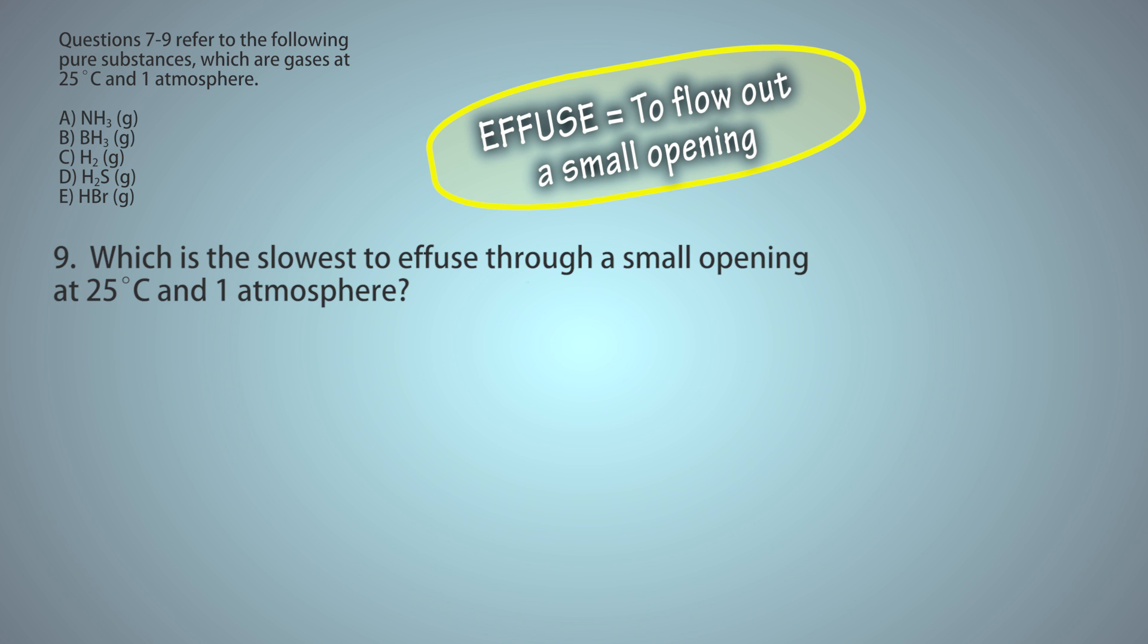Some of these you could eliminate using reason. For instance, you know that H2 is going to be smaller than H2S, or BH3, or NH3. But I'm going to go ahead and calculate them just for completeness.